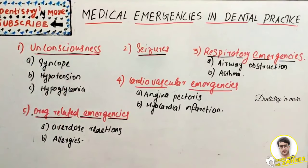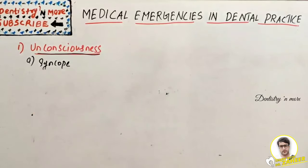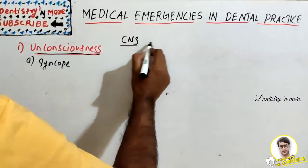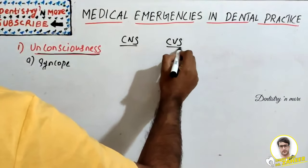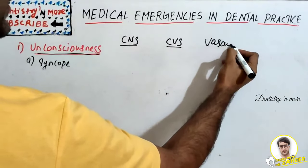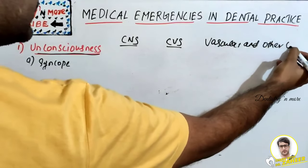Syncope is a short loss of consciousness and muscle strength, characterized by a fast onset, short duration, and spontaneous recovery. The causes of syncope can be broadly classified under CNS symptoms, CVS symptoms, and vascular and other causes.